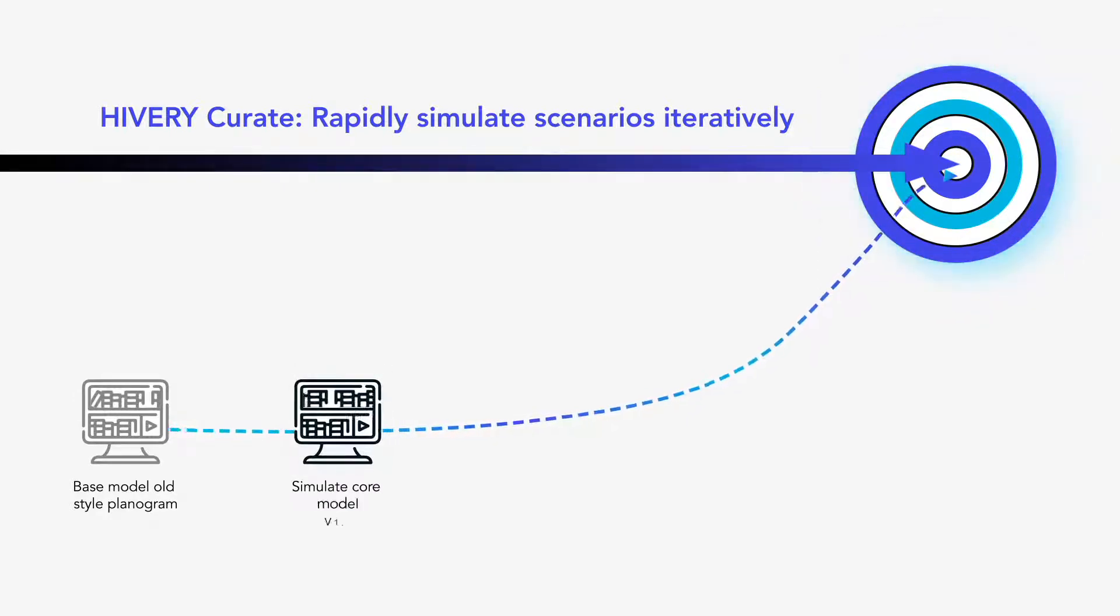In the background, Hivory Curate also starts to process your planogram data from bottom up, that is at store level, to discover patterns and new relationships not possible with current methods. You then clone that base model and add your category goal.